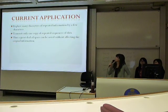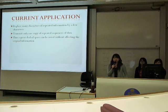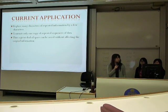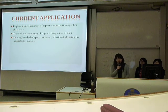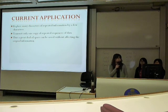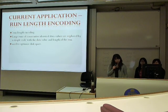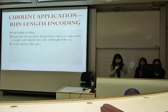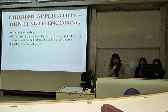Now let's move on to the applications of compression. Data in particular tasks or graphics usually contains repeated sequences of identical information. Compression works by replacing many characters of repeated information with a few characters, and transmitting only one copy of repeated sequences of data. In that way, a great deal of space can be saved without affecting the original information. Another application is run length encoding, where large runs of consecutive identical data values are replaced by a simple code with the data value and length of the run, and it is often used to optimize disk space.